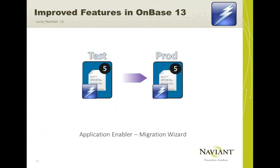The next new feature for App Enabler is the Migration Wizard. You build a great enabled app in Test, get it working with documents retrieved and data found correctly, and now instead of repeating all those steps in Production, you can use the Migration Wizard to move your XML file from Test to Prod very simply. This makes developing and testing enabled applications much easier, and ensures you actually do test your Application Enabler prior to deploying in production.